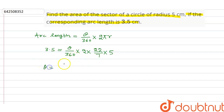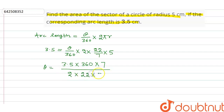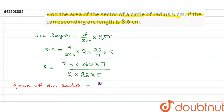Solving for theta: theta equals 3.5 × 360 × 7 divided by 2 × 22 × 5. Now we need to find the area of the sector. The area of the sector equals theta upon 360 into pi r squared, which is (22/7) × r squared, where r equals 5.